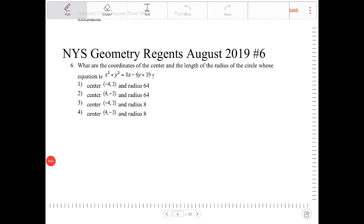What are the coordinates of the center and the length of the radius of the circle whose equation is x squared plus y squared equal 8x minus 6y plus 39?